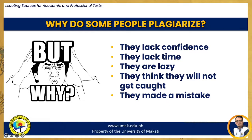They are lazy — when an author doesn't take an assignment seriously, the odds that they will simply submit the works of another as their own increases. On the other hand, when authors see the value in a work, their work ethic improves and they're much less likely to plagiarize. They think they will not get caught — many plagiarize simply because they feel they won't be caught. They made a mistake — this is by far the least common, but it does happen. Whether through poor paraphrasing, lost citations, or some other means, mistakes do happen. Plagiarism from an error usually deals more with inadequate attribution than no attribution and is generally smaller in nature.